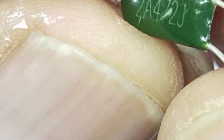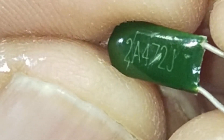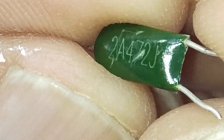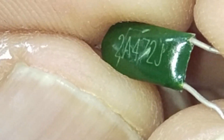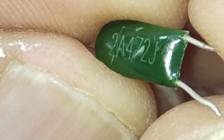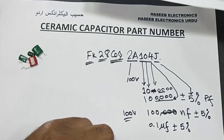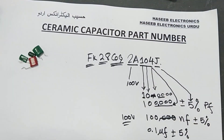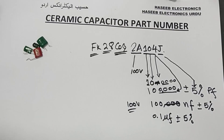As an example: 2A472J — 2A is 100 volts, 472 is 47 followed by two zeros = 4700 picofarad, and J is plus or minus 5%. I hope this video is informative. If it is, hit the like button. If you have any questions, please let me know in the comment box. Thanks for watching. Assalamu alaikum wa rahmatullahi wa barakatuhu.